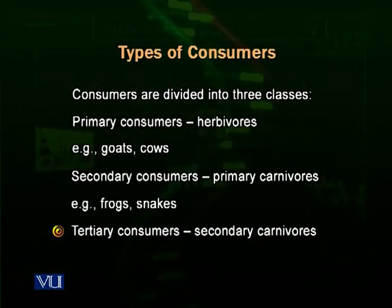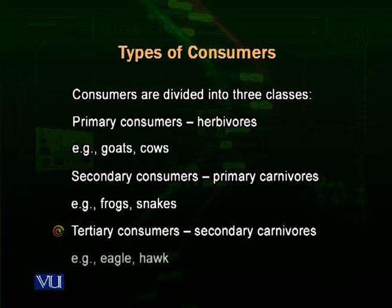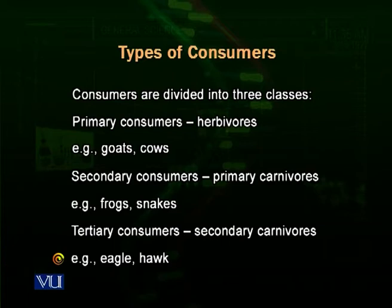Then the tertiary consumers are the secondary carnivores. These are organisms which eat upon the secondary consumers or primary carnivores. For example, hogs and eagles. Hogs usually eat upon frogs, and frogs eat insects, and insects eat grass. Eagles eat snakes, snakes eat rats and mice, and rats and mice eat grasses or plant parts. So eagles are another example of secondary carnivores.